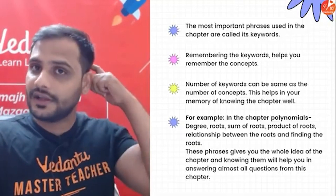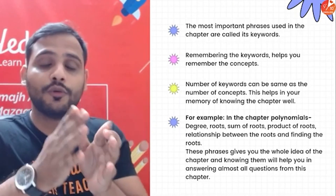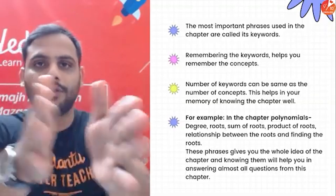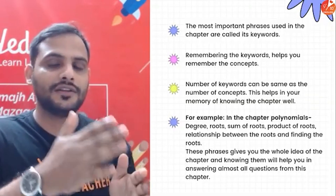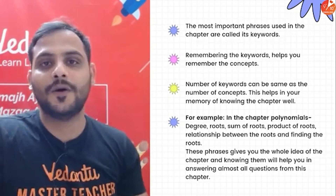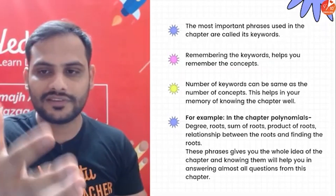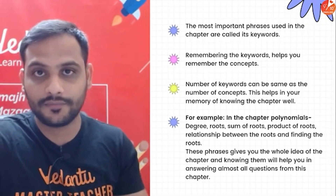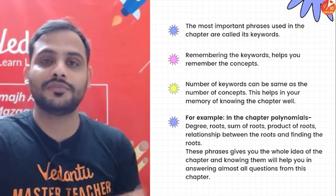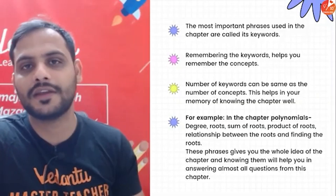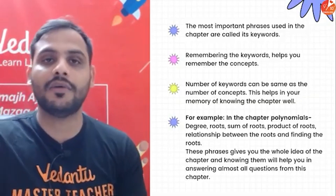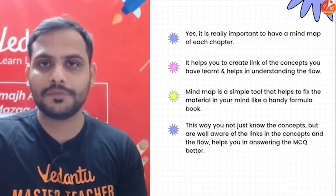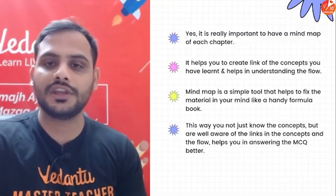Read the question carefully and focus on the keywords, because if you miss even a single keyword, the options are set in such a way that you will definitely mark a wrong answer. Examiners know what mistakes students can make, and when you make that mistake, your wrong answer will also be one of the options. For example, if the sum of the roots is one by two using minus b upon a, the examiner will intentionally also put minus one by two as an option, knowing some students will forget the negative sign.